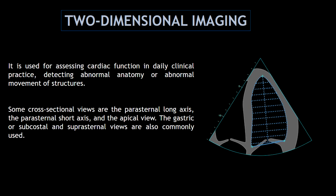We use 2D imaging to assess the cardiac function on a daily basis. We can also assess any abnormalities of the structures. Some of the cross-sectional views we use to assess the heart are the parasternal long axis view, the parasternal short axis view, and the apical views.